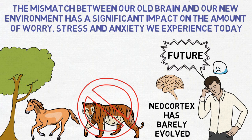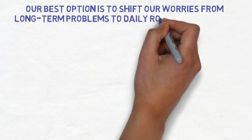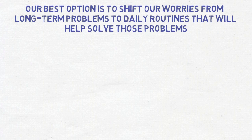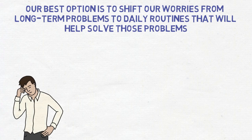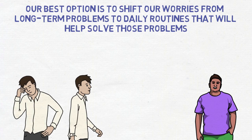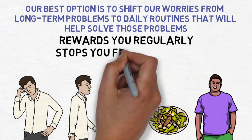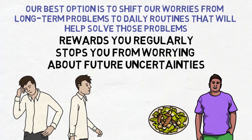Since we can't travel back and change the timeline of our civilization, our best option is to shift our worries from long-term problems to daily routines that will help solve those problems. For example, instead of worrying about living longer, focus on taking a walk each day. Instead of worrying about losing enough weight for the wedding, focus on cooking a healthy dinner tonight. The key insight that makes this strategy work is making sure your daily routine both rewards you regularly and stops you from worrying about future uncertainties. In other words, this strategy is all about making the most of your today, your present.